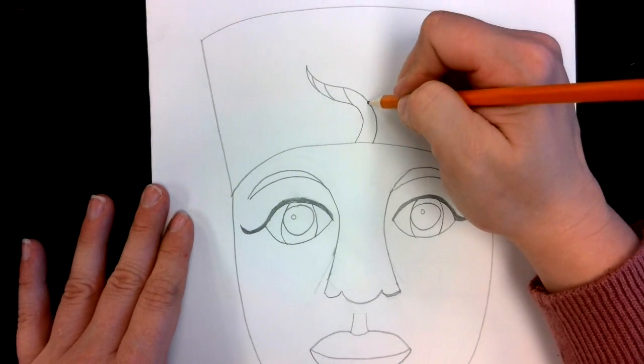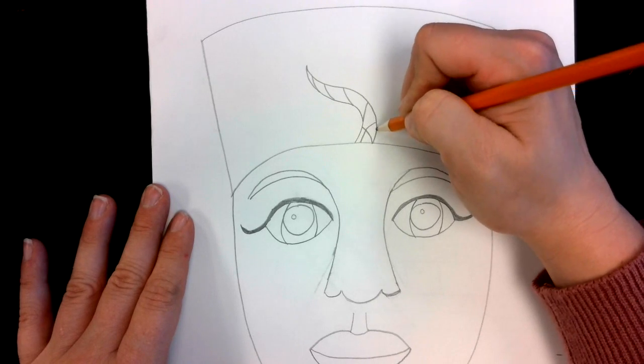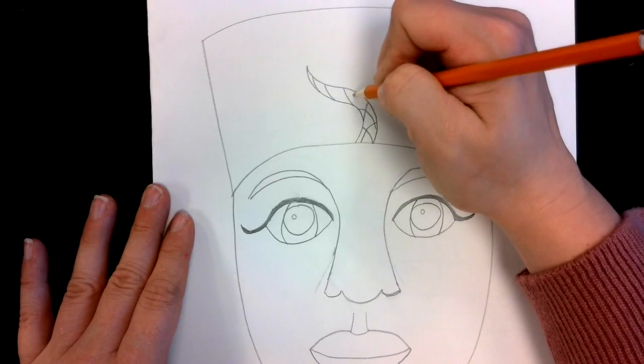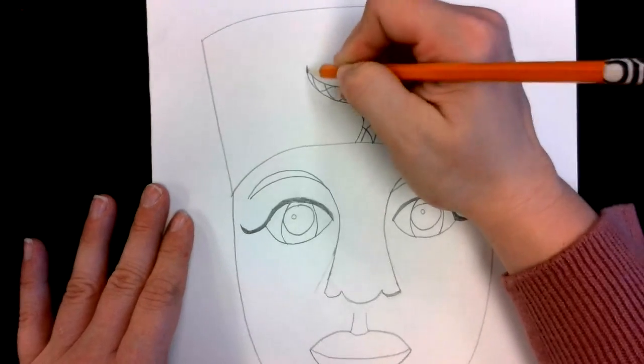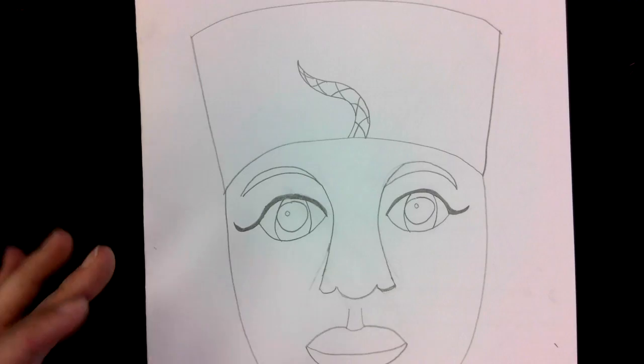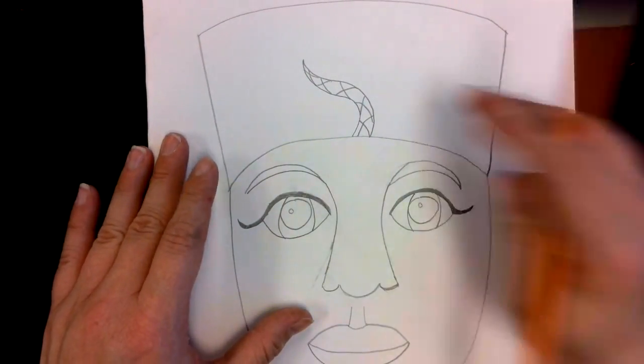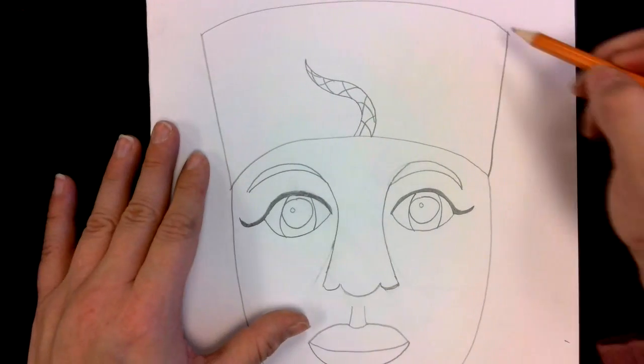Pharaohs idolized animals and thought they were gods, so they included them in a lot of things that they wore or had. I'm going to decorate that first. Again, you don't have to do anything I'm doing, these are just ideas. Then you can start to decorate your crown.